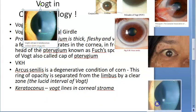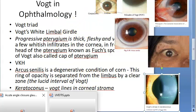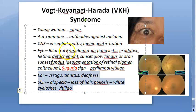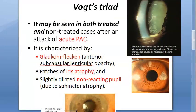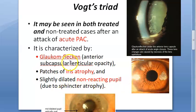All the Vogt eponyms in ophthalmology have been covered. The main focus of this video was Vogt's triad: glaukomflecken, iris atrophy, and slightly dilated non-reactive pupil — which occurs after an attack of acute primary angle closure. That's all for now.